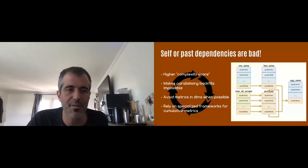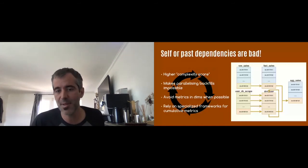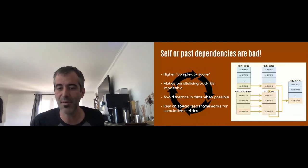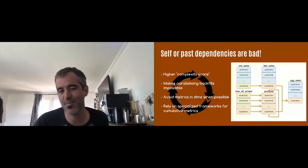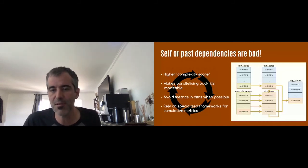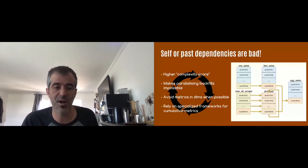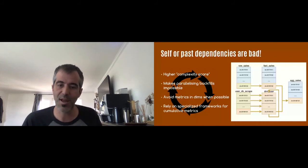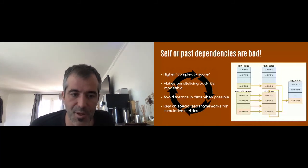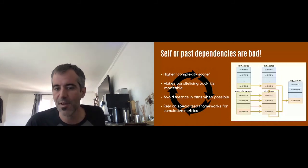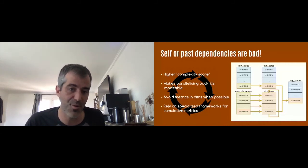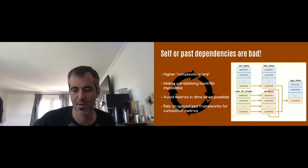Here I'm talking about the idea of self-dependency or past dependency — the general idea that if you build your user dimension based on yesterday's dimension, you end up with a much higher complexity score. Any change in history becomes very prohibitive; you have to compute things sequentially and can't do parallel processing for backfills. So we generally encourage an approach that does not use past partitions to create current or future partitions, and there are ways around that.